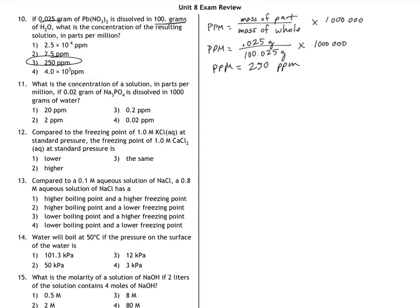Number 11. What's the concentration of a solution in parts per million if 0.02 grams of sodium phosphate is dissolved in 1,000 grams of water? So I'm working off the equation that I have already written up here, but I'm just going to go ahead and plug in values and save some time. So I'm going to have 0.02 grams as the mass of my part, and the mass of the whole is going to be basically 1,000, but also plus 0.02 grams, and I'll multiply that by a million. And I'm getting 19.99, which is basically 20 parts per million, so choice one is my answer.